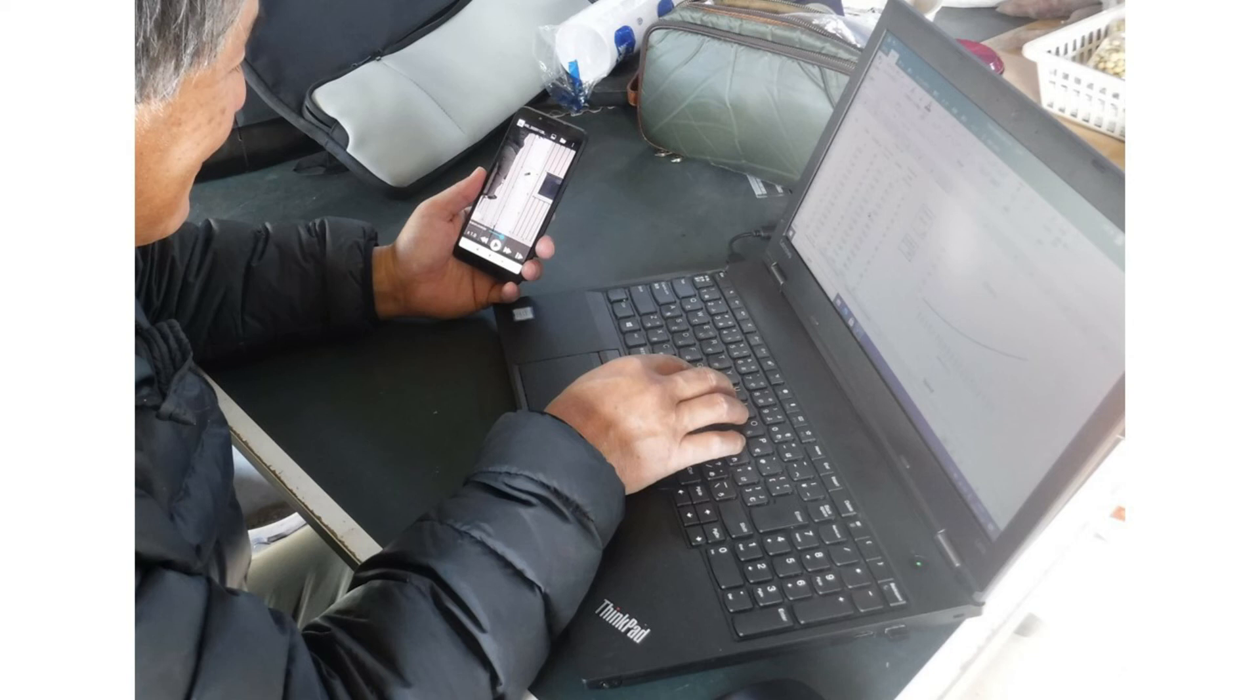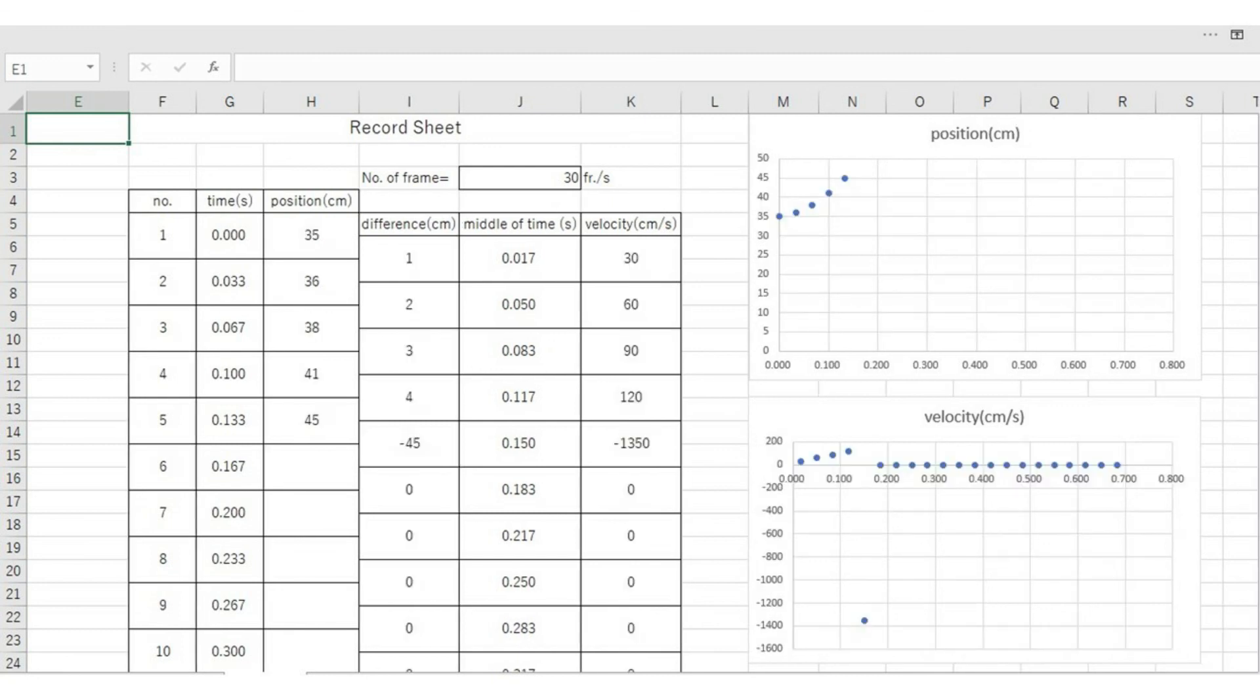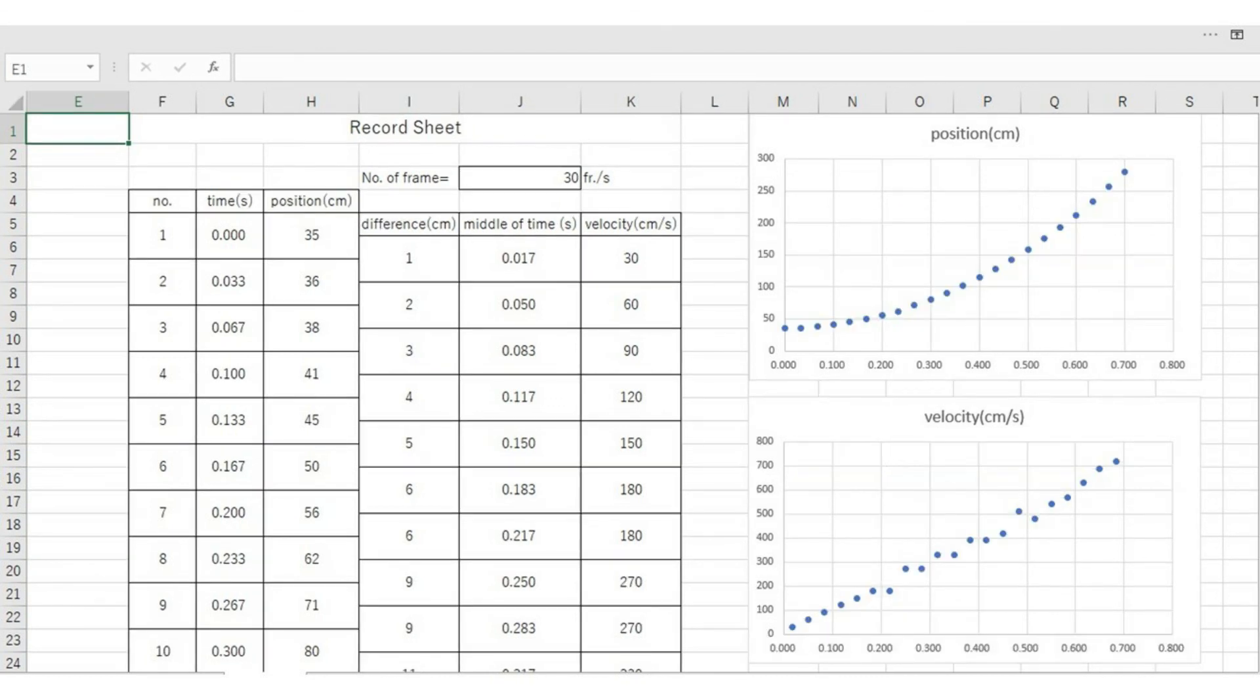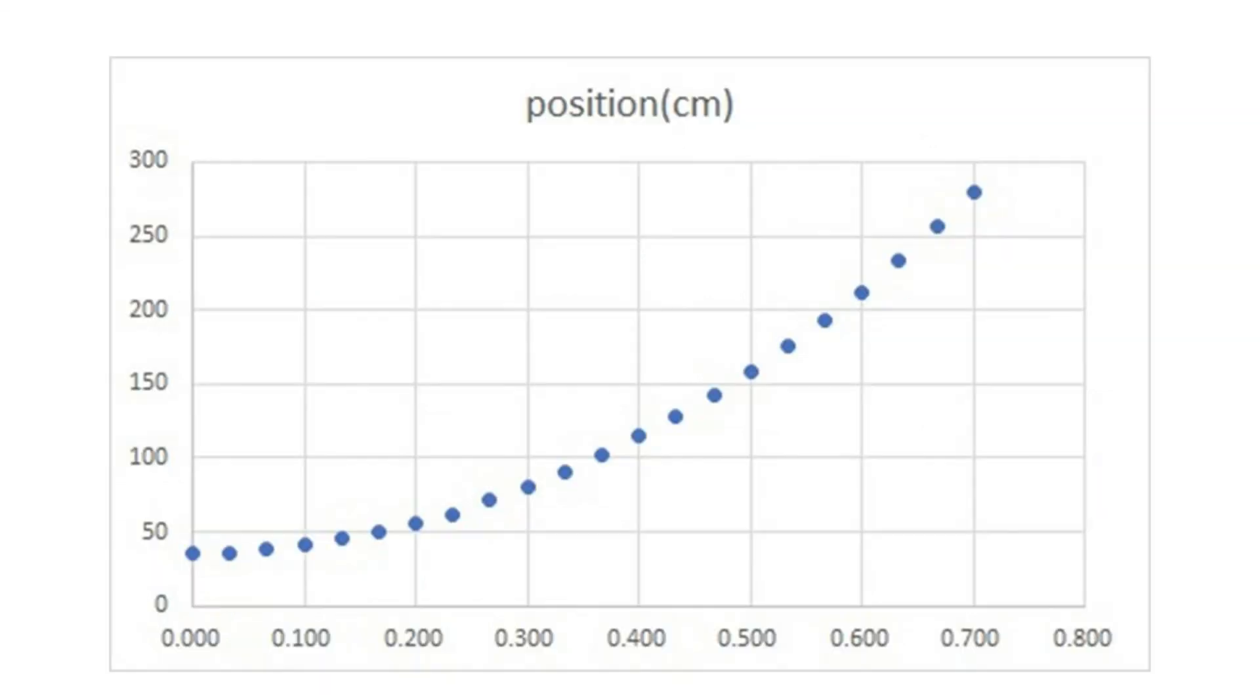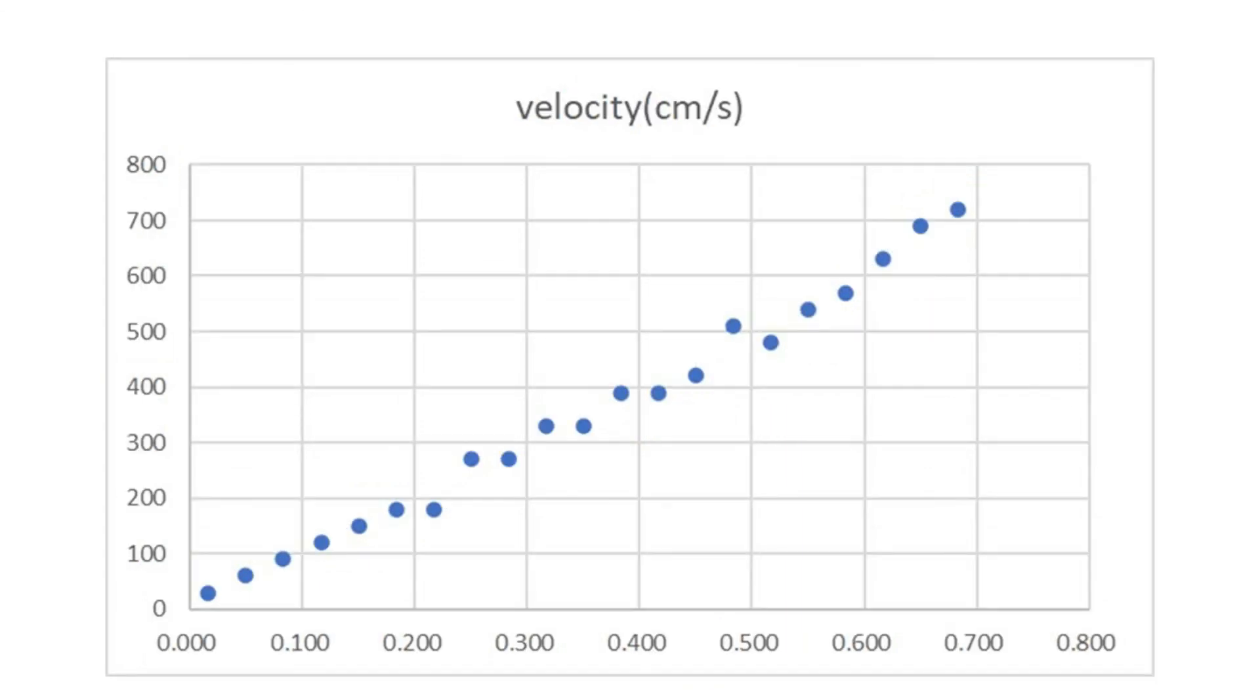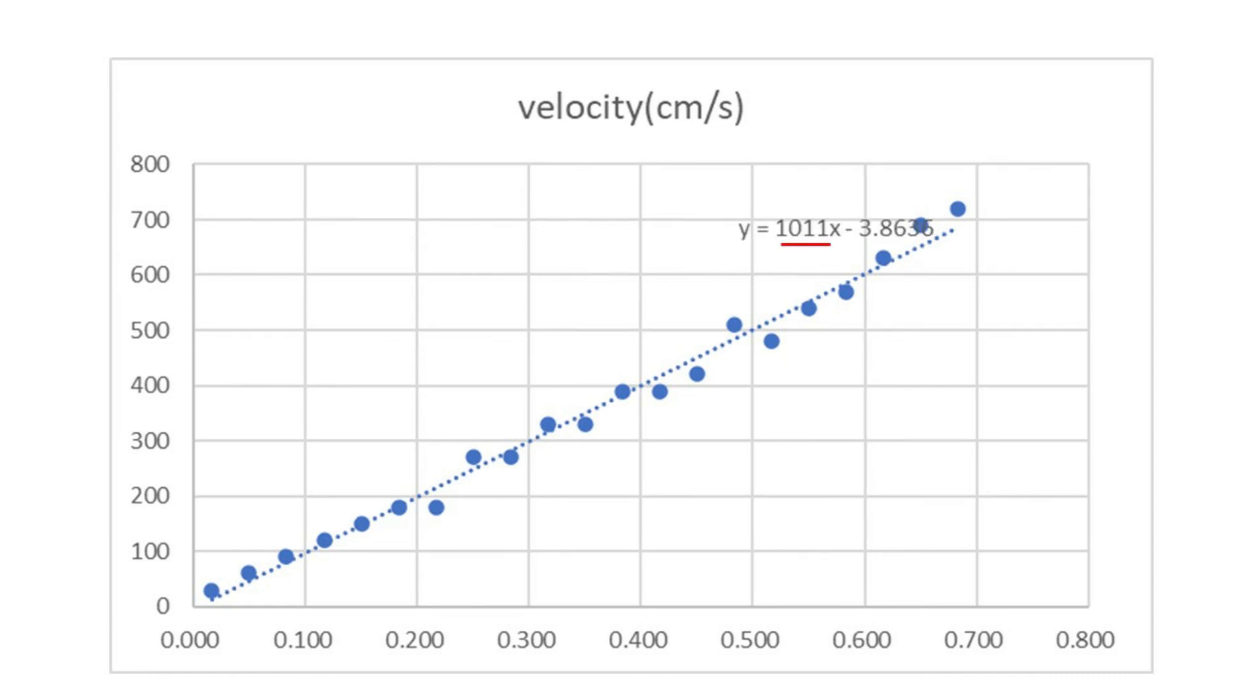If you make an Excel sheet with calculation formulas, you can draw a graph at the same time as reading. Show approximate line in the graph and calculate a slope. It shows a slope is 1011 in this measurement.